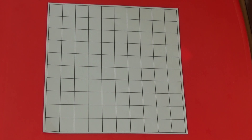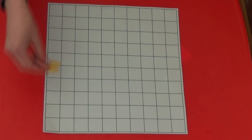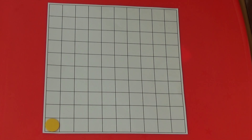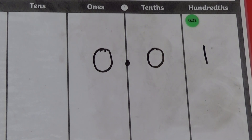So if I put one counter on my square, it is showing one hundredth, or zero point zero one. We can also show this on a place value grid by putting one hundredth or zero point zero one counter in the hundredths column.